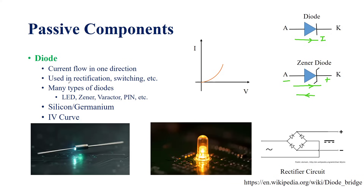There are a variety of applications of a diode. One is called rectification and another is switching. You put a positive voltage on the anode with respect to the cathode and the diode conducts — it acts as a switch. A diode can also be used as a rectifier: using a bridge rectifier with an AC signal applied, the output produces a DC voltage. The circuit acts as a rectifier which converts AC into a constant DC signal.